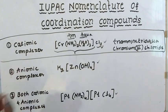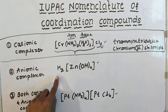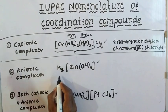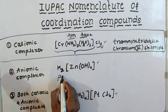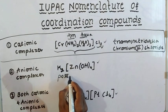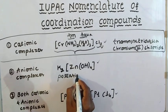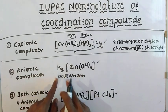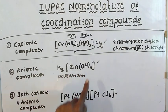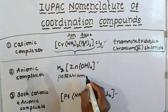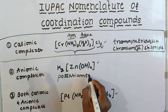Now, anionic complexes. First, let's name the cation — it is potassium. Next, let's enter the complex. There is only one type of ligand, and there are four of them, so the prefix is tetra.